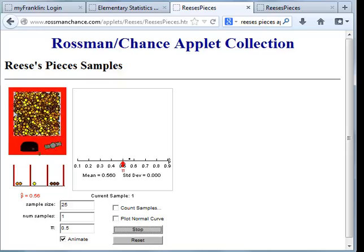Suppose I draw another sample of 25 candies. Well sure enough, it's not the same as the first sample. There, 40% of the candies were orange. So it's plotted right here below the population proportion. It's a little further away. It's about 10 percentage points away.